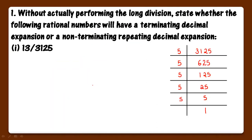Now let's see the questions one by one. First part: 13 upon 3125. Sabse pehle check karna hoga ki ye dono numbers co-prime numbers hain ya nahi — their HCF should be 1. Ye kisi common number se cut nahi ho raha hai, so they are co-prime numbers. Now the second step is we have to do the prime factorization of the denominator. So we can write 13 upon 3125 as 13 upon 5 raised to the power 5.